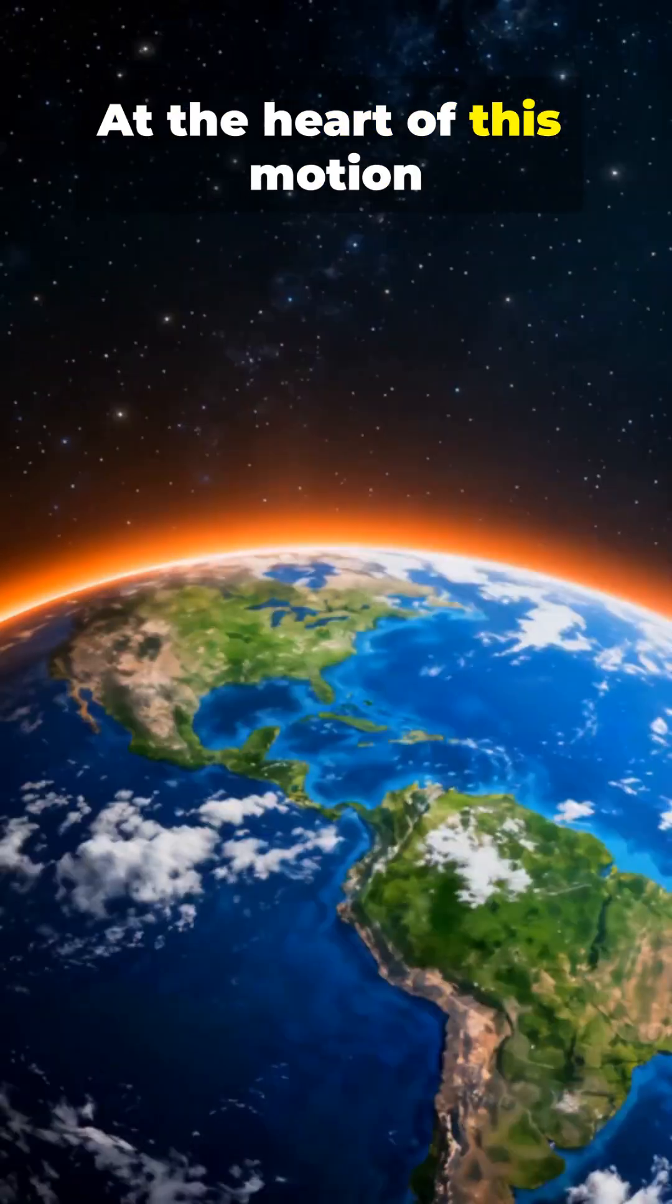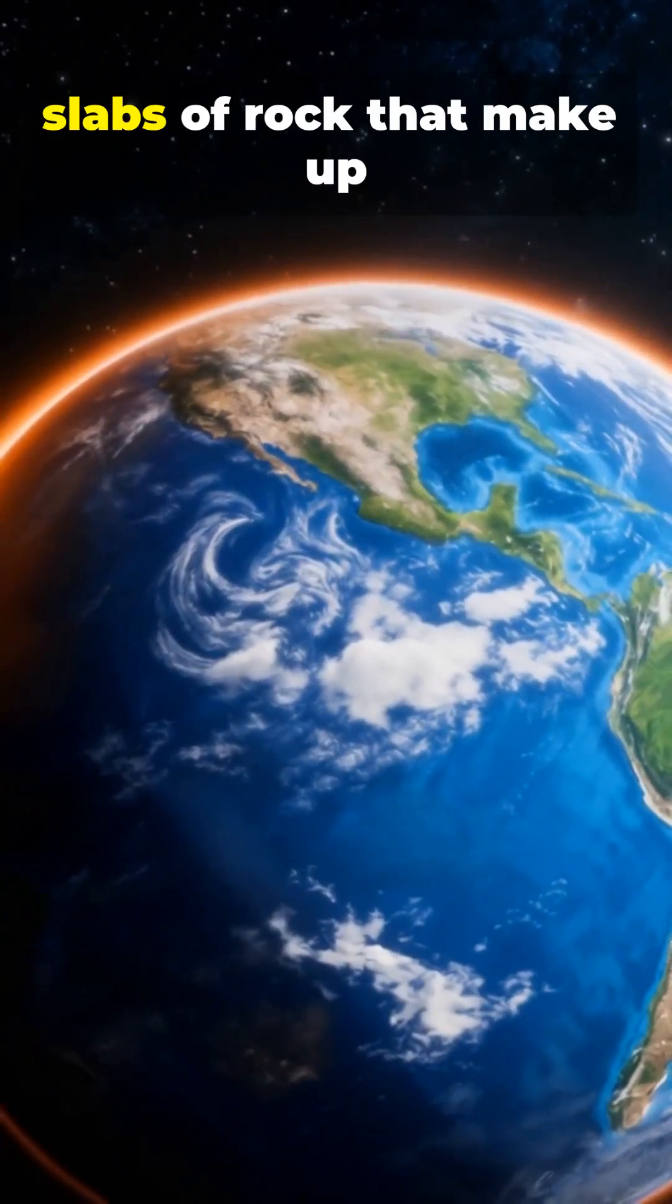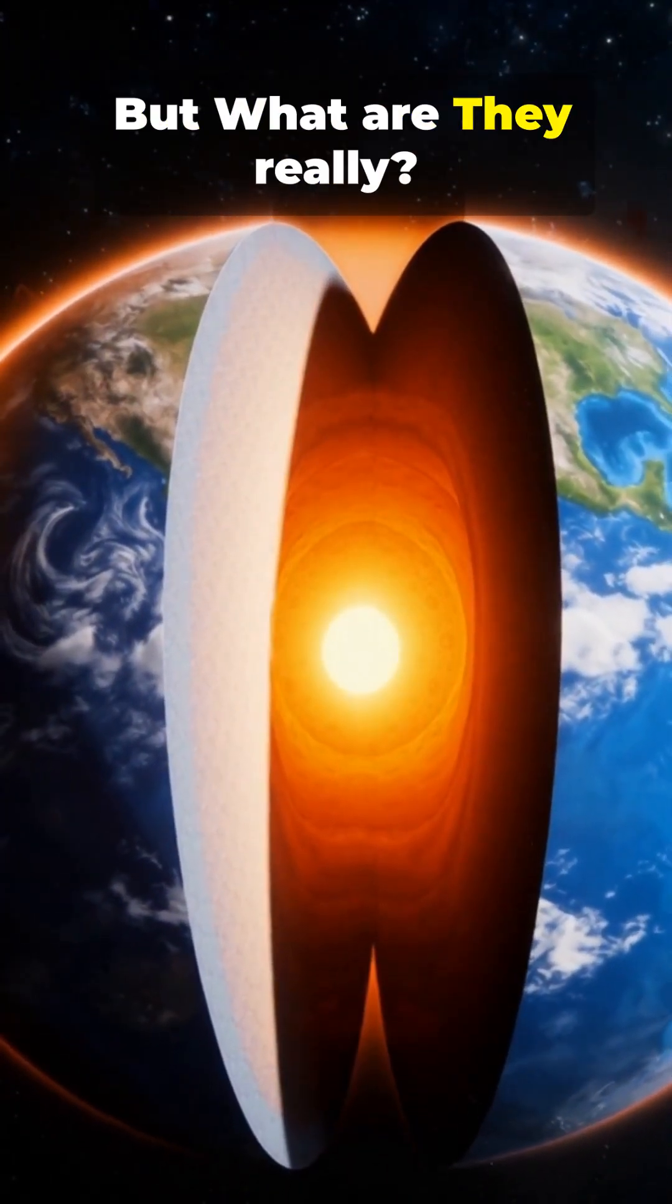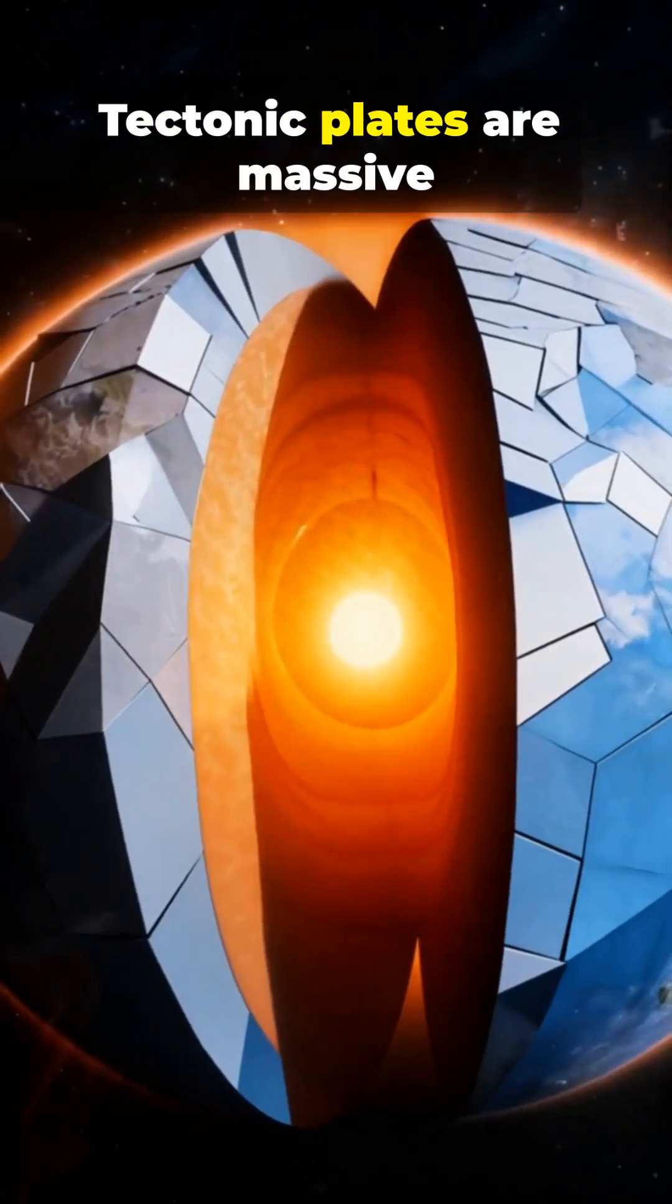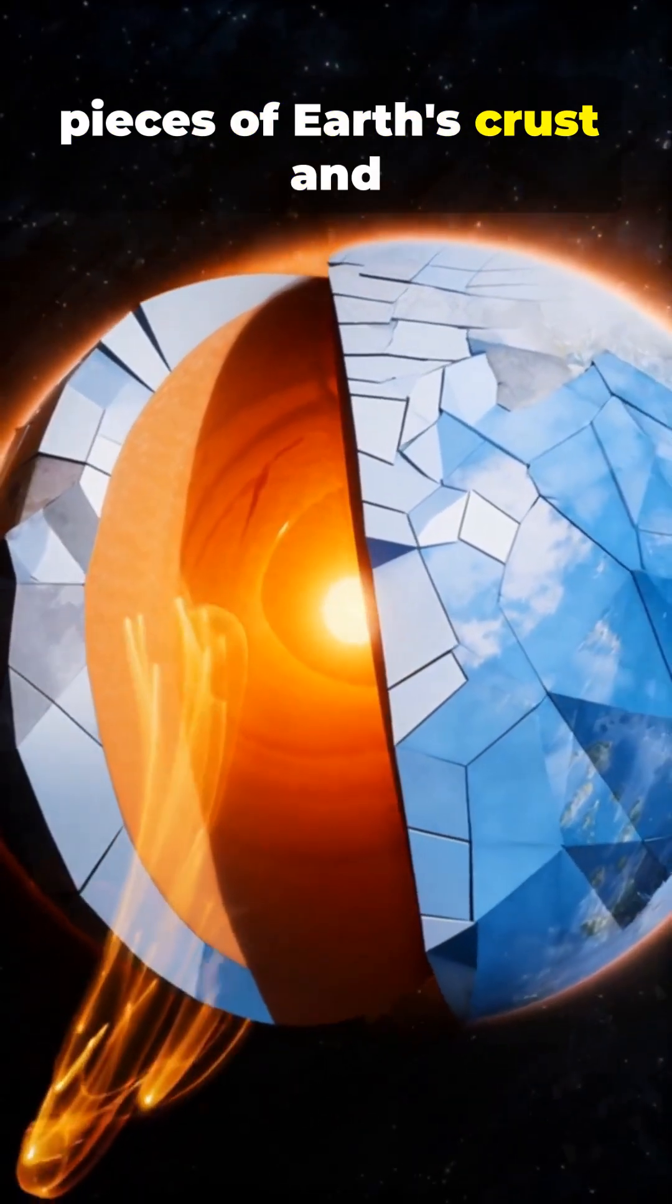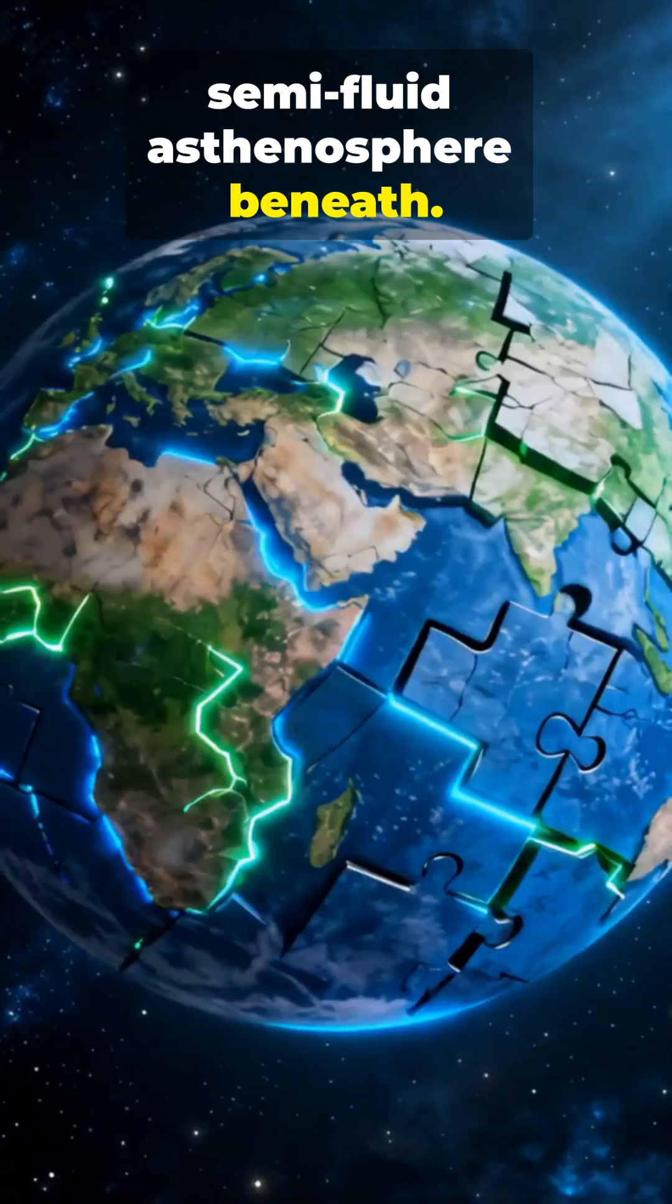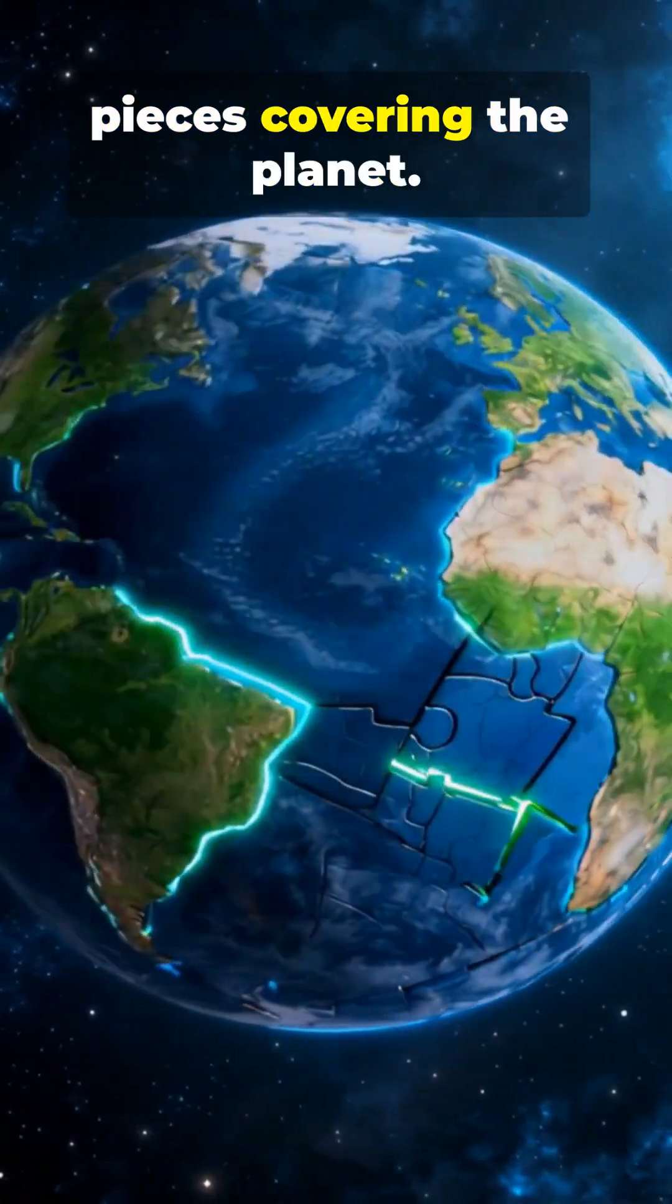At the heart of this motion are tectonic plates, giant slabs of rock that make up Earth's outer shell. But what are they really? Tectonic plates are massive pieces of Earth's crust and upper mantle that float on the semi-fluid asthenosphere beneath. They're like giant puzzle pieces covering the planet.